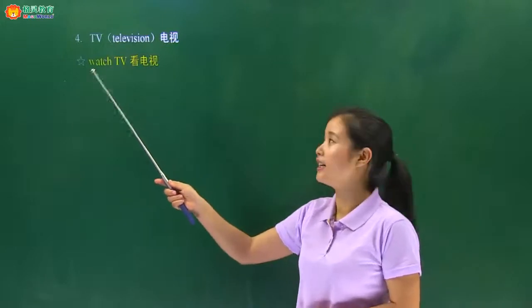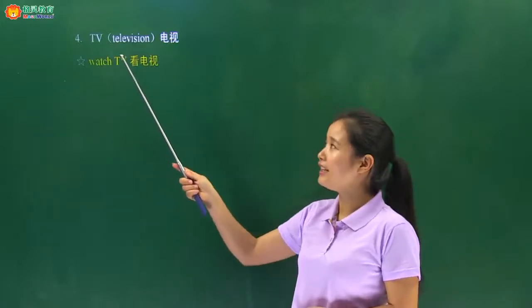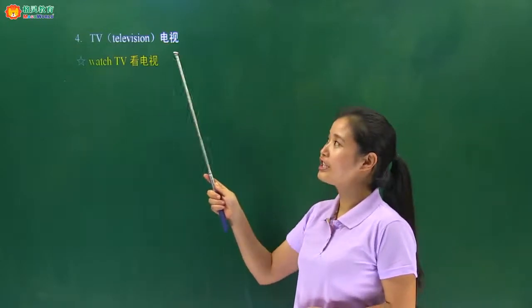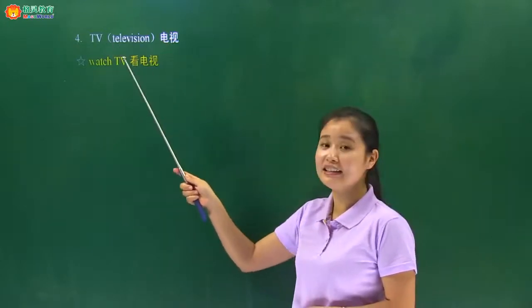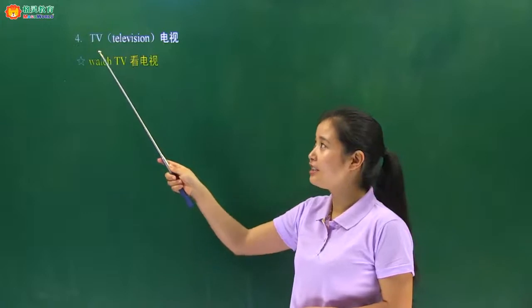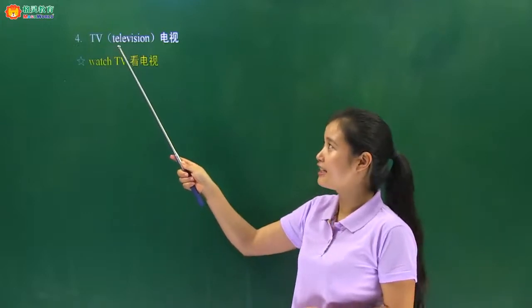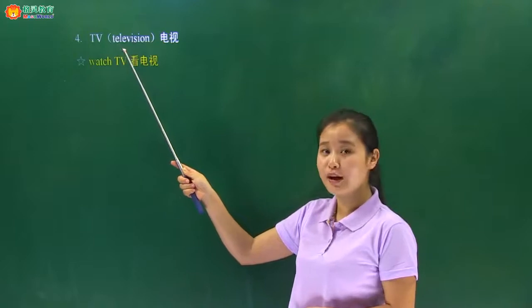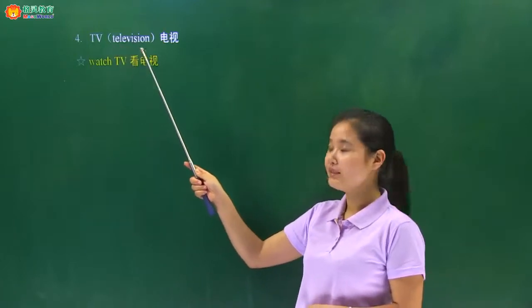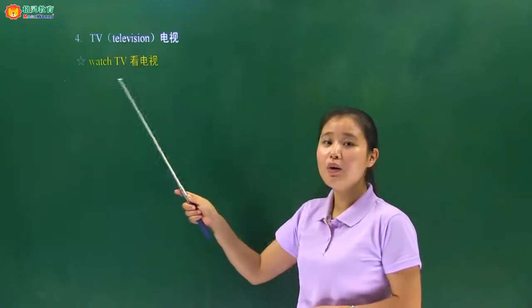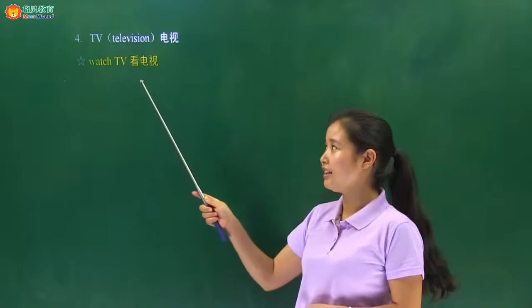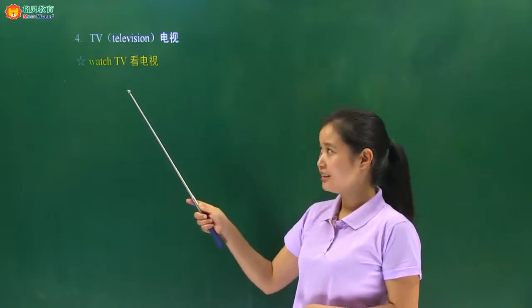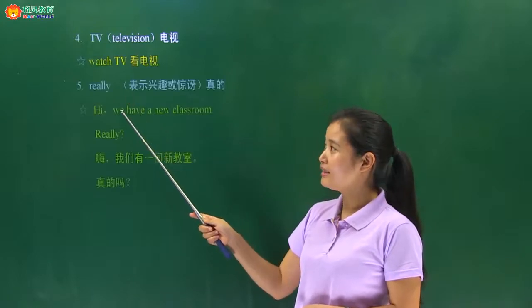The fourth one，第四个，TV，电视。括号里面是它的全写 television，比较难，大家知道 TV 的意思就可以了。Television 是 TV 的全写。看电视：watch TV.